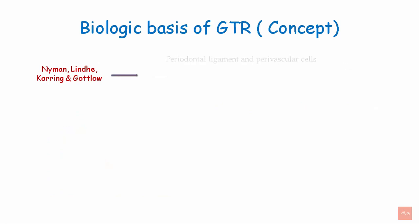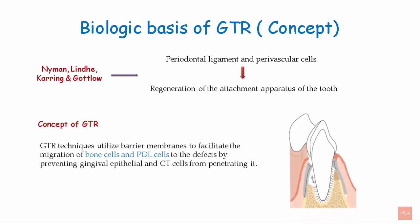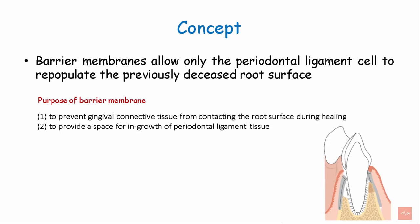According to research by Neiman and colleagues, they suggested that periodontal ligament and perivascular cells have the potential to regenerate the attachment apparatus of the tooth. The concept of GTR involves guided techniques that utilize barrier membranes to facilitate the migration of bone cells and the periodontal ligament cells to the defect areas, while preventing gingival epithelial and connective tissue cells from penetrating the membrane. Barrier membranes not only allow the periodontal ligament cells to repopulate the previously diseased tooth but also provide a space for ingrowth of periodontal ligament tissue cells. The membranes are intended to perform their functions for six to eight weeks after placement.